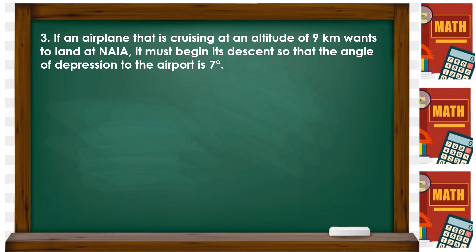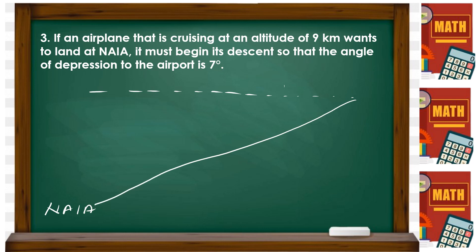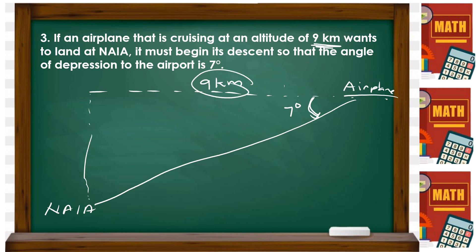Number three: if an airplane cruising at an altitude of 9 kilometers wants to land, it must begin its descent so that the angle of depression to the airport is 7 degrees. So the airplane is going down. This is the airport. We show the horizontal line, then the angle of depression. The altitude is 9 kilometers, and the angle of depression is 7 degrees. Draw your airplane descending toward the airport.